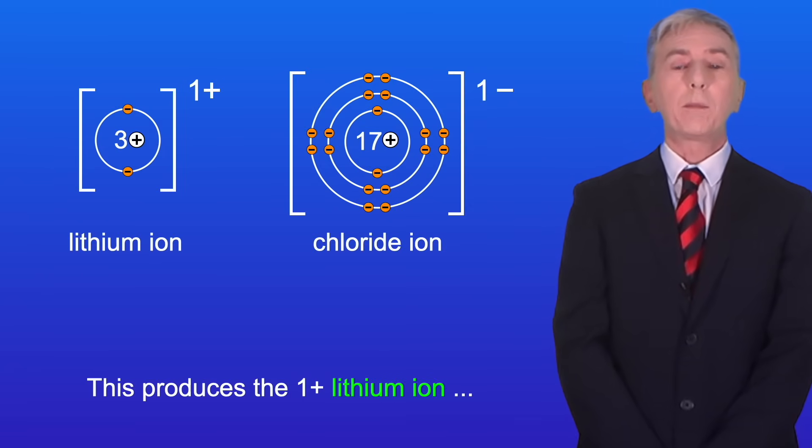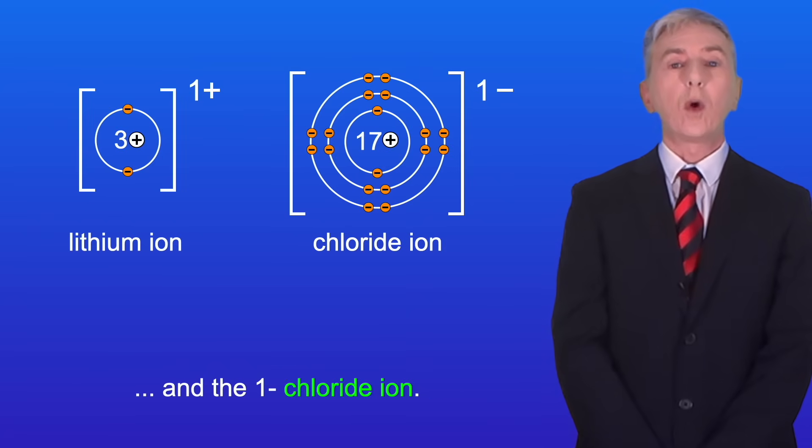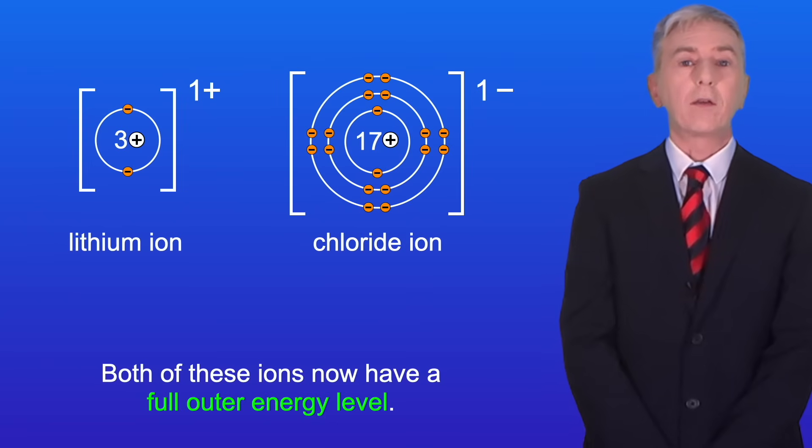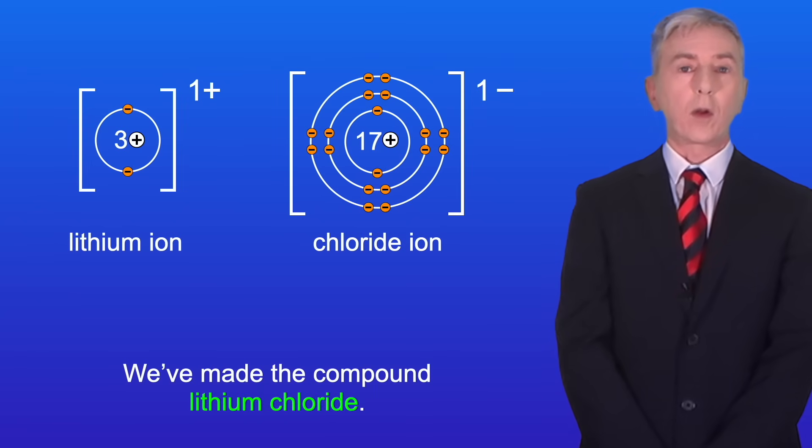This produces the 1 positive lithium ion and the 1 negative chloride ion. Both of these ions now have a full outer energy level and we've made the compound lithium chloride.